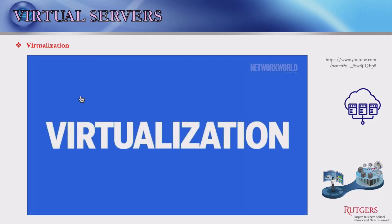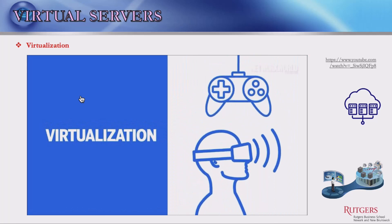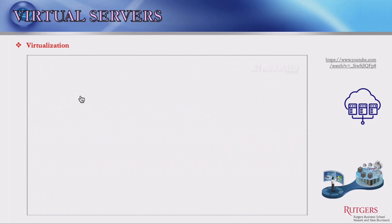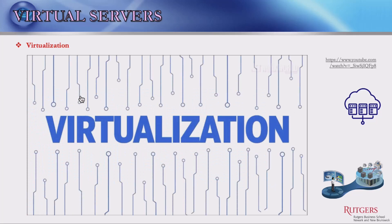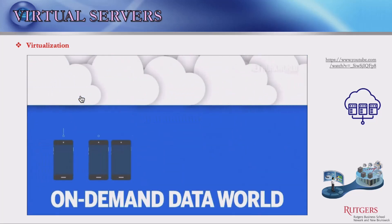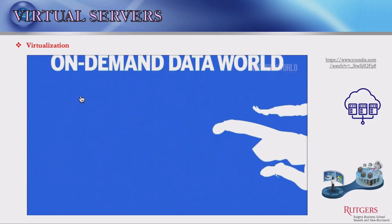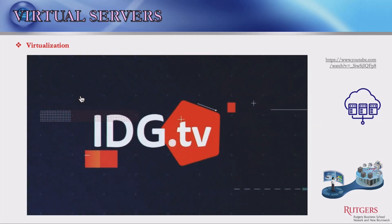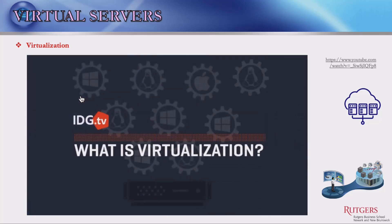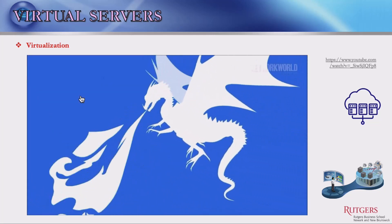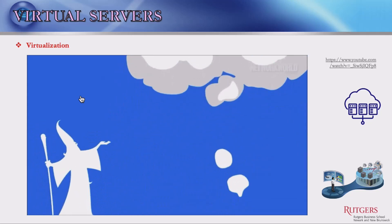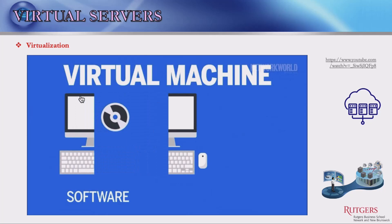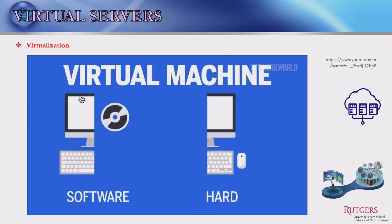In the IT world, virtualization has revolutionized the way we think about data and where it lives, moving us closer to a completely on-demand data world. Virtualization is the act of making something appear real when in reality it doesn't exist. A virtual machine is created when software separates the operating system and its applications from the physical computer hardware — a software process called a hypervisor.